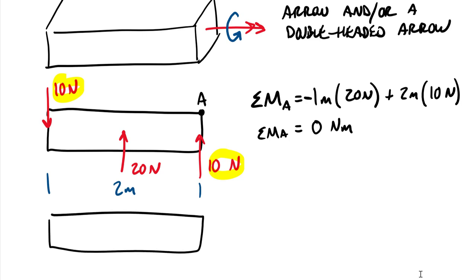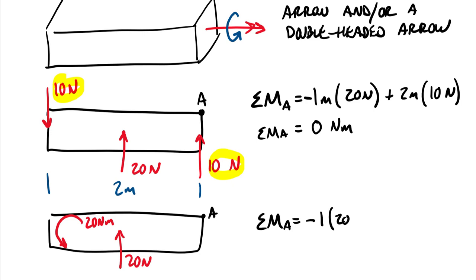Now if we do recognize those two 10-newton forces as a couple and draw the equivalent system: keep the 20-newton force and add a positive 20 newton-meter couple. It technically doesn't matter where we place it. Summing moments at point A: we get −1 meter × 20 newtons plus the +20 newton-meter couple, which still gives us a sum of moments about point A equal to zero newton-meters — exactly the same value. One used a couple, one used a pair of forces — completely equivalent.